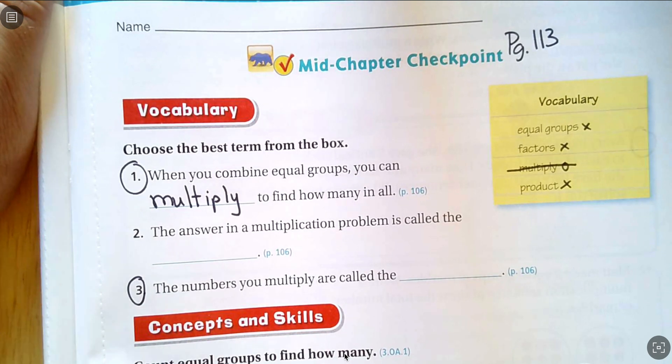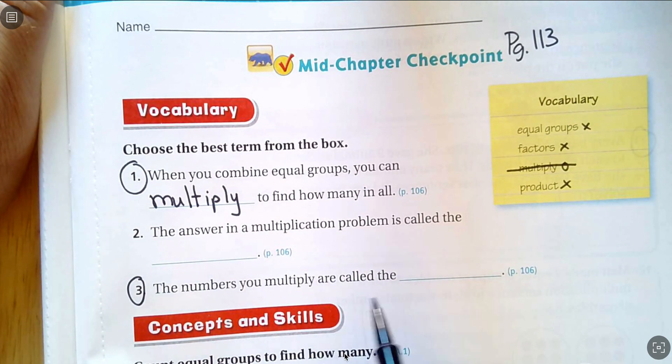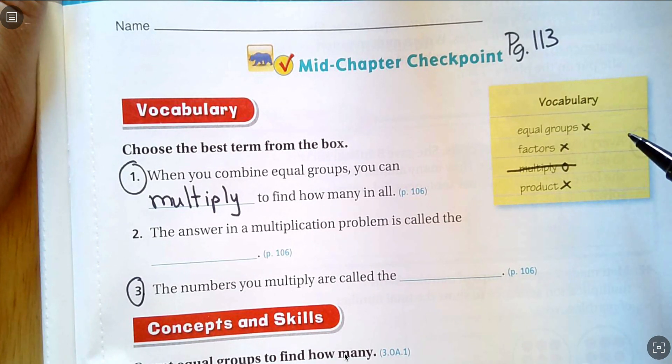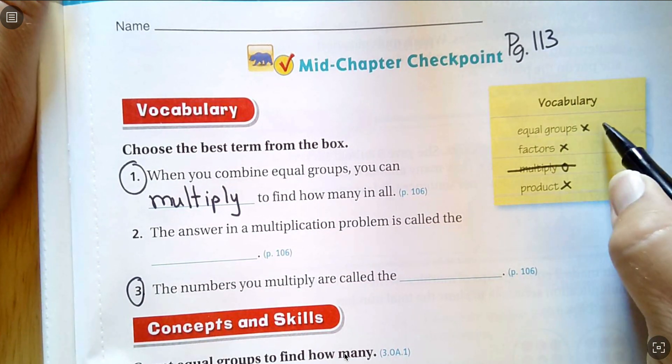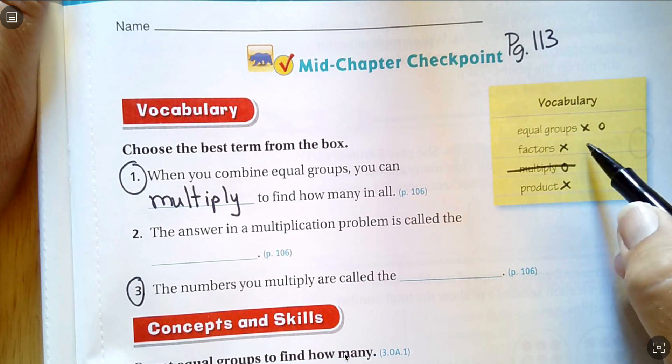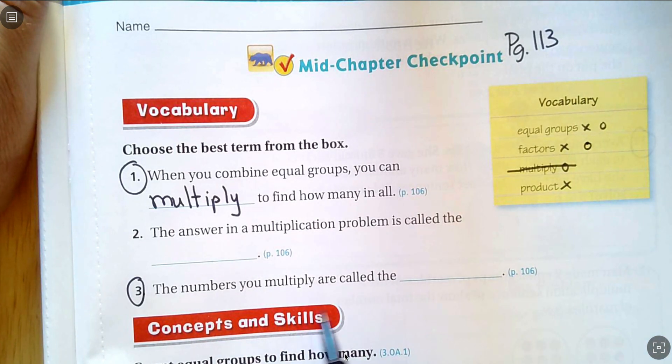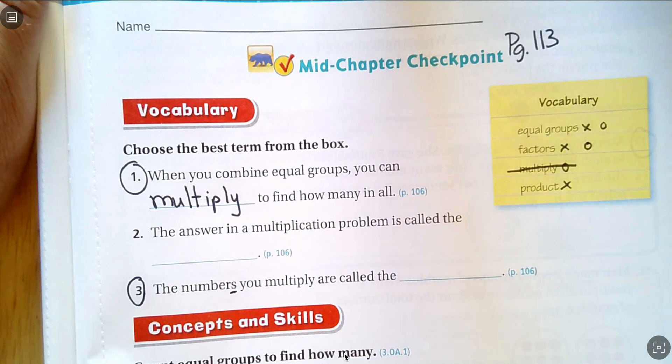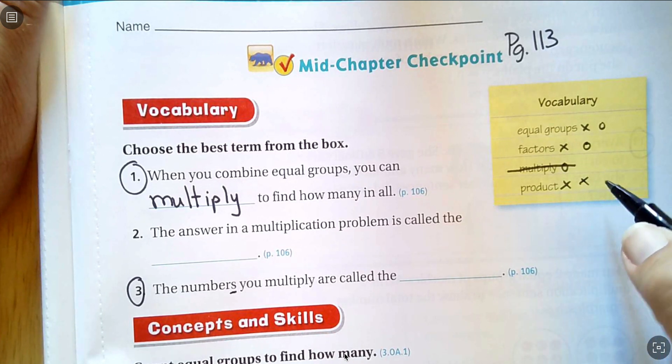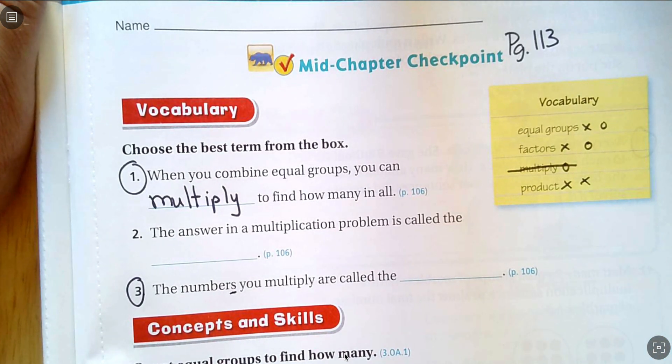Number three, the numbers you multiply are called the equal groups. Maybe. The numbers you multiply are called the factors. Maybe. The numbers you multiply are called the product. I don't think so. And I remember product is not the numbers you multiply. I remember that one is the answer.